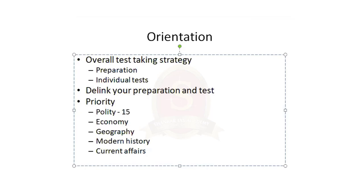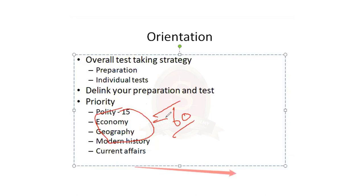Each year they ask about 15 questions on average from each of the four subjects. Last year geography had only five questions; in 2020, from current affairs no questions or maximum four came. But overall there were 60 questions from four subjects — this is the general trend. If they reduce in economy they increase in polity or economy. Current affairs usually contributes around 35 questions, but in 2020 it was less because agriculture and environment questions increased unexpectedly.